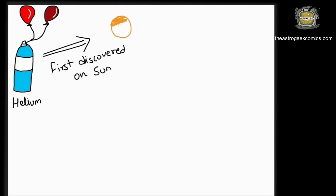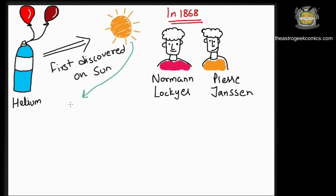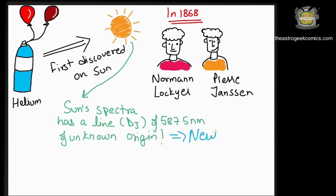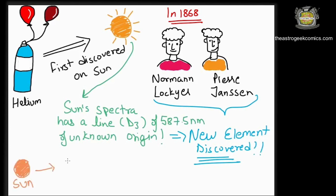One interesting fact related to this is that Helium, a noble gas used in balloons, was actually first discovered on the sun before it was discovered on earth. In 1868, Norman Lockyer and Pierre Janssen found the D3 line at 587.5 nm belongs to the then undiscovered element which was named after the Greek god of sun Helios as Helium.